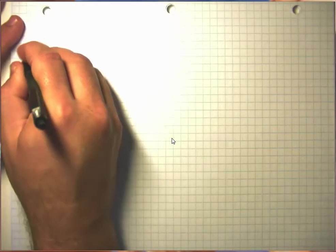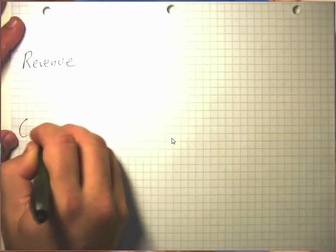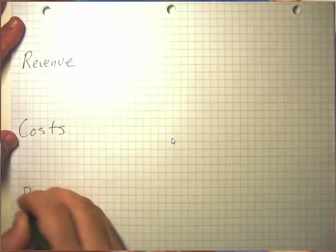So I want to go ahead and lay out some formulas here that are going to be helpful when we're thinking about revenue and costs and profits and that kind of stuff. Three major things we want to talk about: we want to talk about revenue, we want to talk about costs, and we want to talk about profits.